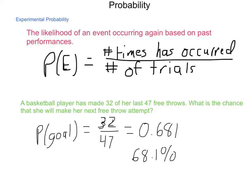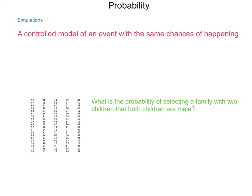After we talk about experimental probability, we have to realize this situation where not all items that we want to look at can really be experimented with, like playing a game. What we're going to do is we have what are called simulations. A simulation is a controlled model of an event with the same chances of happening.